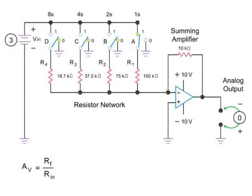Let's look at what happens when switch A is set to logic position 1, or closed. This results in an input resistance to the amplifier of 150 kilohms.